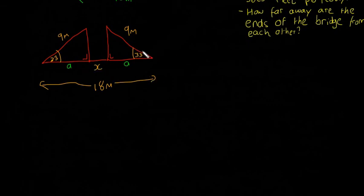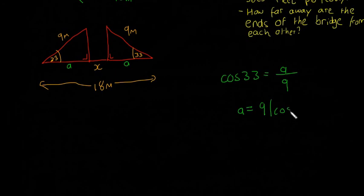We're going to use cos. We're going to look at this triangle here: cos 33. Cos is adjacent over hypotenuse, so cos of 33 is going to be adjacent, which is 'a', over the hypotenuse, which is 9. That means 'a' is equal to 9 times cos of 33.